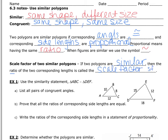We're going to use the similarity statement — remember, these statements are very important and are already telling us that these are similar. We're going to list all the pairs of congruent angles by matching them up. A corresponds with D, so angle A is congruent to angle D; angle B is congruent to angle E; and angle C is congruent to angle F.